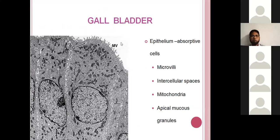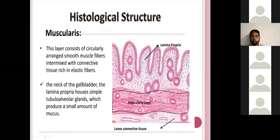The epithelial cells are absorptive cells with a large number of microvilli, giving a brush border. Intercellular spaces are present between two adjacent epithelial cells. Near the neck of the gallbladder, mucus-secreting glands are present in the lamina propria. The muscularis layer is a smooth muscle layer. In some areas, the mucosa rests directly on the muscularis externa.